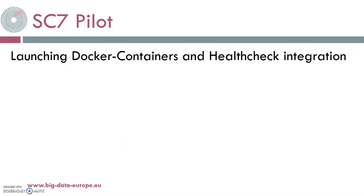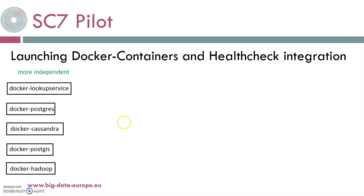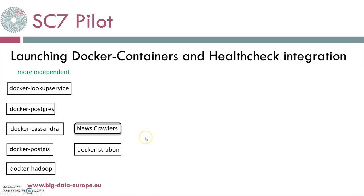For running all the software components efficiently, we have to think backwards: when each component is running, the ones that provide its backend support should be up, running, and healthy. We will see the sequence for launching all of them and divide the Docker containers into groups based on the level of priority. At first, we can run the completely independent and fully backend Docker containers of lookup service, Postgres, Cassandra, PostGIS, and Hadoop. When they are ready, the news crawlers can run and store data in Cassandra. Strabon can also run since it is based on PostGIS. All the Spark dockers can run — usually one Spark master and three or four workers — and when a Spark job is committed, it can read data from the HDFS.